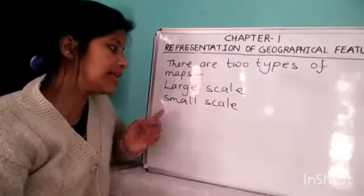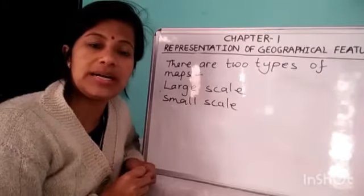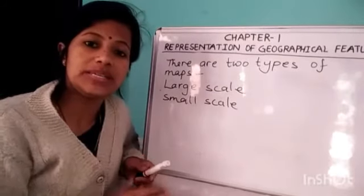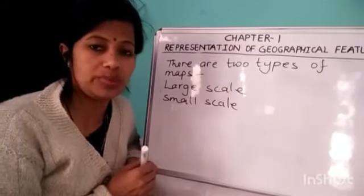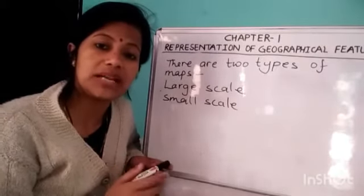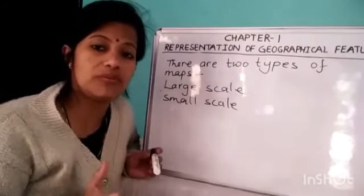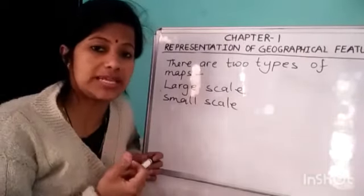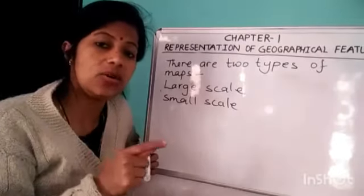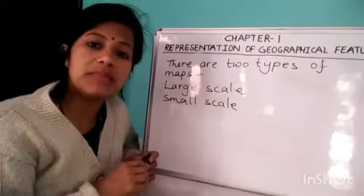Large-scale maps do not mean maps showing a large area. That is not correct. Large-scale maps are those that provide a large amount of information about a small area — large amount of details about a small area. They are called large-scale maps.